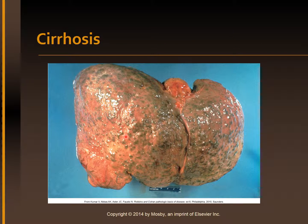This is a picture of cirrhosis that develops secondary to alcoholism. The characteristic diffuse nodularity of the surface is due to the combination of regeneration and scarring of the liver.